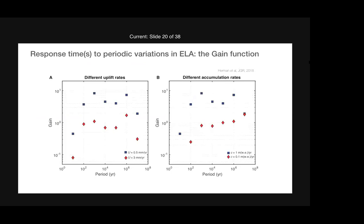In all cases you get no gain at short periods, high gain at mid-range periods, and low gain again at long periods. The reason: at short periods, you're changing climate faster than the ice response time, so the ice can't transmit the signal to erosion. At very long periods, the ice and glacier adjust to remain always in steady state with uplift, so again nothing happens to the flux. Different uplift rates and different mean accumulation rates produce different gain functions — meaning different mountains respond very differently to the same Milankovitch forcing.